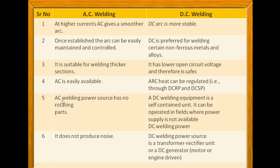AC welding power source has no rotating parts. DC welding equipment is a self-contained unit and can be operated in the field where power supply is not available. AC welding does not produce noise, but in case of DC welding power source, it is a transformer-rectified unit.